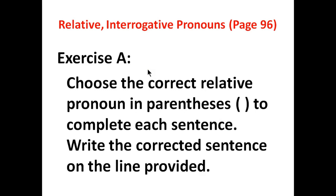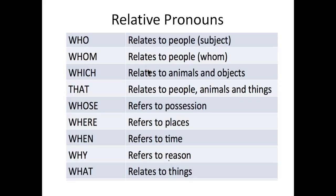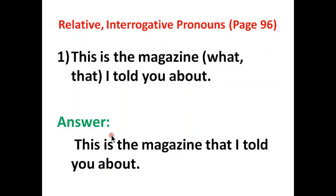Now on page 96 you will have two exercises. In exercise A, you will choose the correct relative pronoun in parentheses to complete each sentence and write the corrected sentence on the line provided. Relative pronouns include words like who, whom, which, that, whose, where, when, and why. These words join two different clauses to make one new expression. Your answer will be the complete sentence written on the line provided.